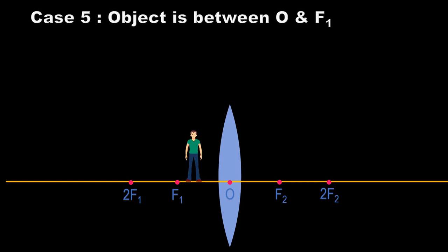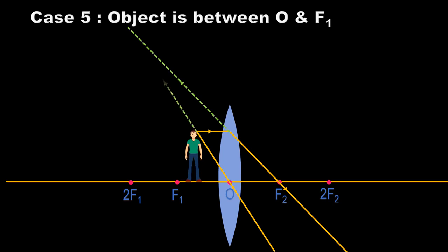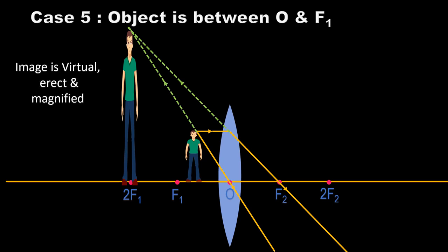Case 5: when the object is between O and F1. The ray parallel to the principal axis refracts and passes through F2, and the other ray passes through the optical center. Observe that these two refracted rays are diverging. Extending the rays backward, their intersection gives the image. The image is virtual and erect, but magnified. The position of the image is behind the real object. This is why convex lenses are used as magnifying glasses.